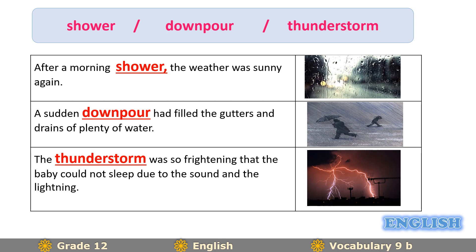The first sentence: 'After a morning shower the weather was sunny again.' A shower means a short period of rain. The second: 'A sudden downpour had filled the gutters and drains with plenty of water.' The clues are 'sudden' and 'plenty', so a downpour is a large amount of rain that falls quickly in a short period of time. The third: 'The thunderstorm was so frightening that the baby couldn't sleep due to the sound and the lightning.' A thunderstorm means there is a storm with lightning.